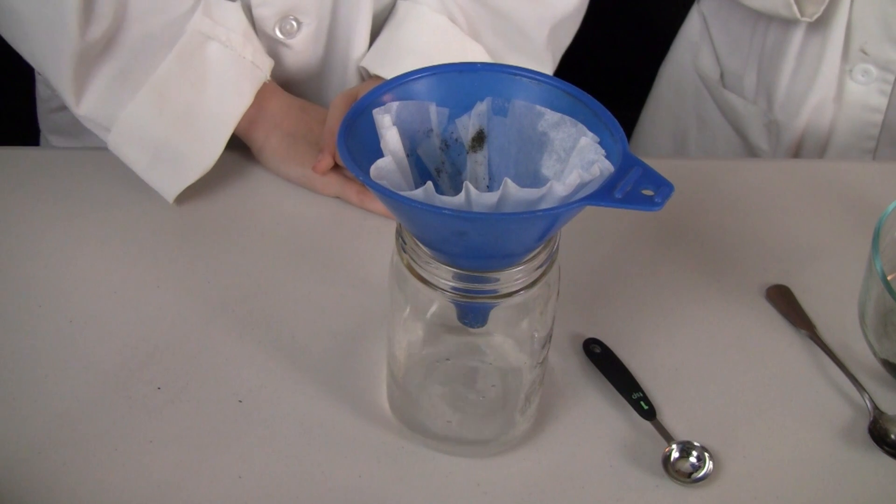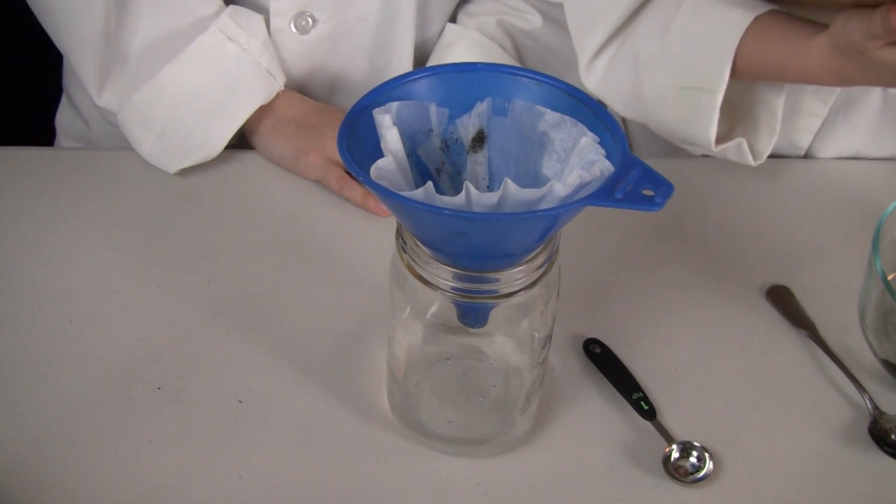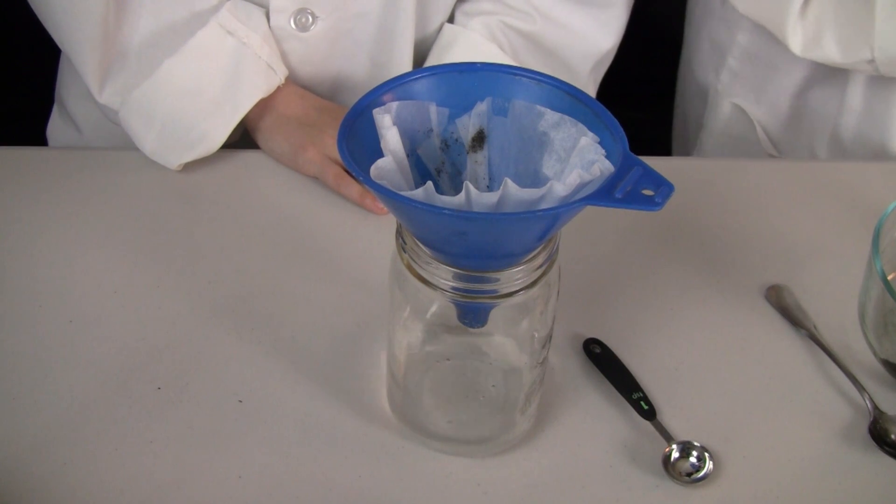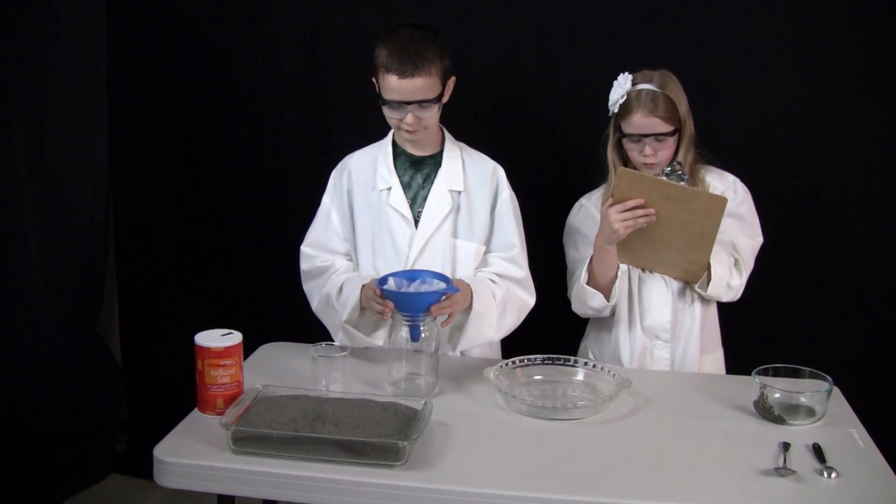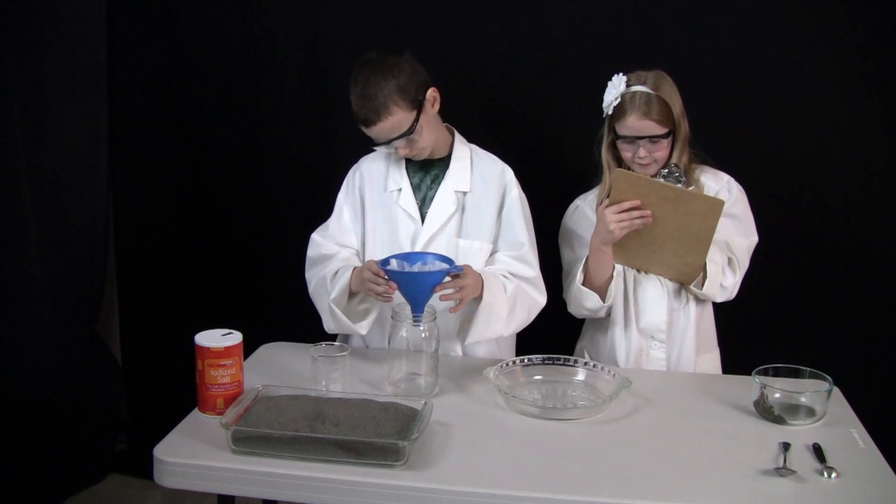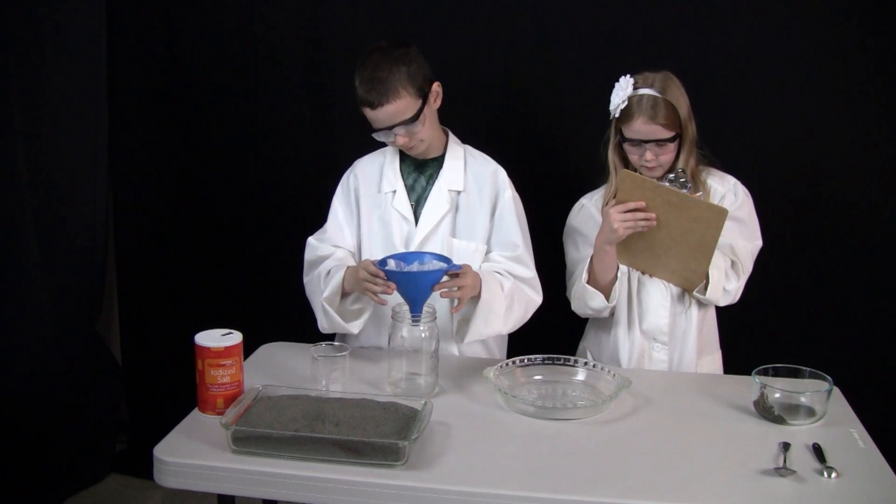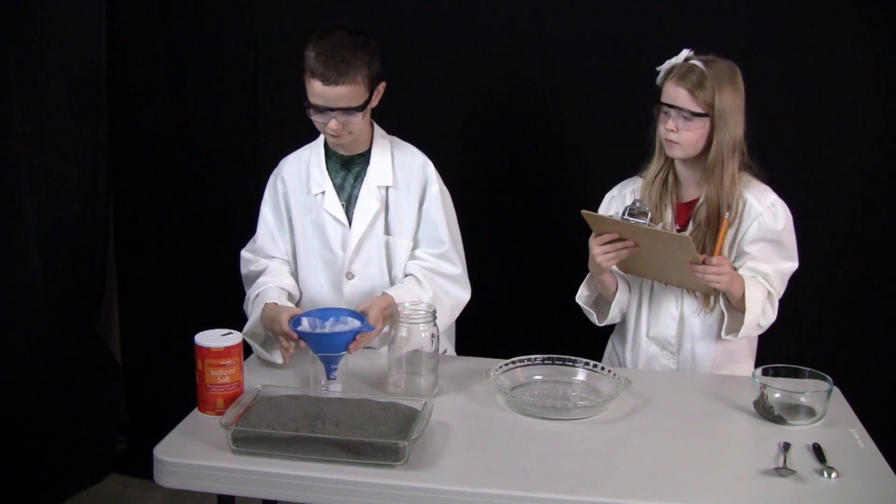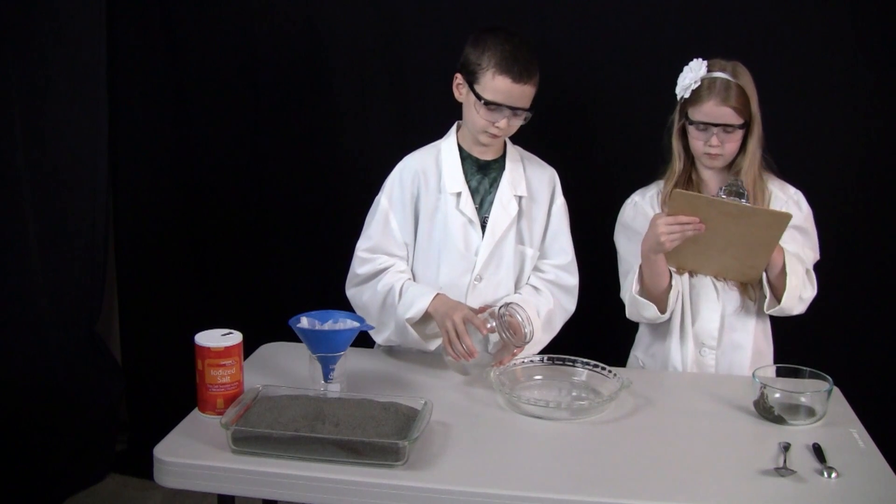So as soon as that stops dripping, what you're going to do is pour the mason jar into the pie pan. As soon as all the water has gone through the filter, and actually not all the water has to go through if you're in a hurry, then put that to the side, maybe on top of the beaker or something, and then pour the mason jar water into a pie plate.